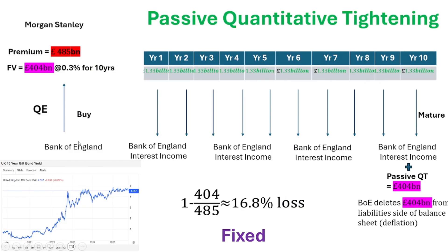The first thing we're going to discuss is the Bank of England conducting quantitative easing — printing money to buy gilts at a premium, paying more than face value from commercial banks. Over roughly 15 years average duration, they get paid interest and when the bond matures they get their last bit of income plus passive QT. But they overpaid: they paid 485 billion and only got back 404 billion — about a 17% loss. This interest income cannot offset this cost because it's already going towards offsetting the interest on excess reserve expense.